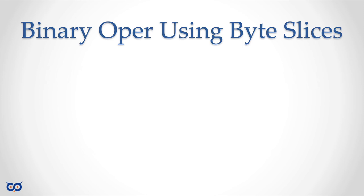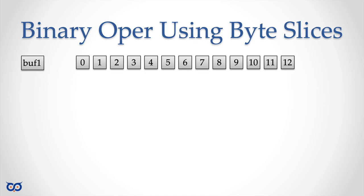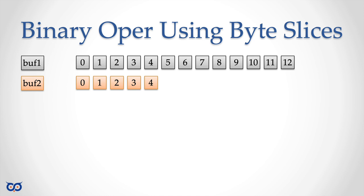What we're really going to be doing is using binary operations on slices of bytes. I want to give you an illustration before we get into the code. Let's imagine we have Buffer 1 with some bytes — 13 bytes numbered 0 to 12 — and Buffer 2 with also some bytes. These two buffers don't have to be equal. Our goal is to do an XOR of Buffer 1 and Buffer 2. With XOR it doesn't matter which one comes first.